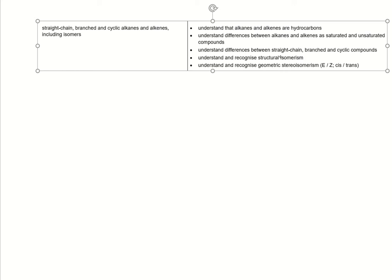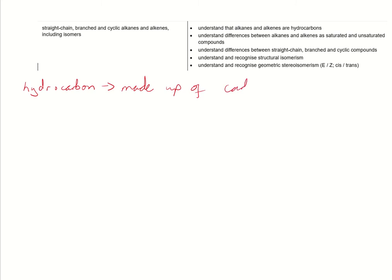To start us off, understanding that alkanes and alkenes are hydrocarbons. So what we need to know is, what is a hydrocarbon? It's something made up of carbon and hydrogen and keyword only. If you forget that, you won't get the mark, because alcohols, aldehydes, ketones, carboxylic acids, etc., all of them contain carbon and hydrogen, but they've got many other atoms as well, the heteroatoms, things like oxygen. So alkanes and alkenes, only those two.